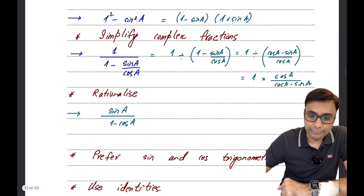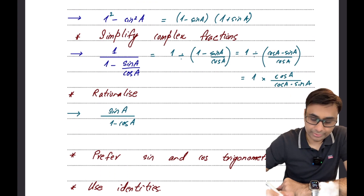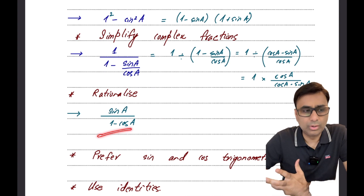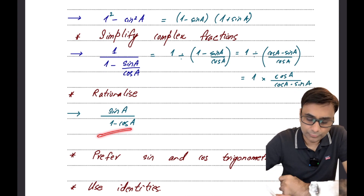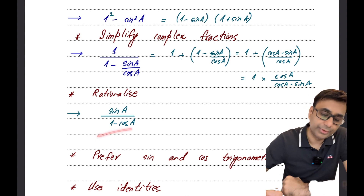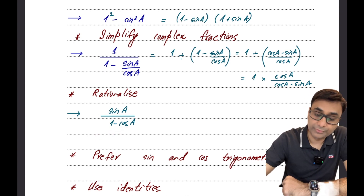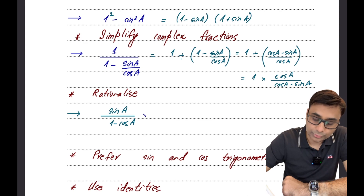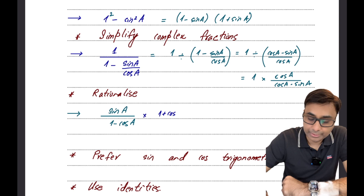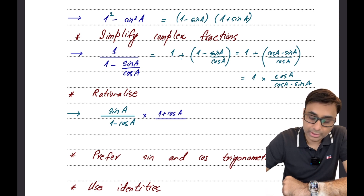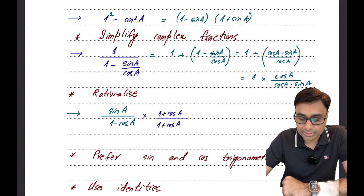Also keep this option in mind: if you see no possibility of simplification and no formula you can apply, you have the option of multiplying and dividing by the conjugate. So if it's (1 - cos a), you can multiply it with (1 + cos a) and divide it by (1 + cos a) and then move on and try to simplify.